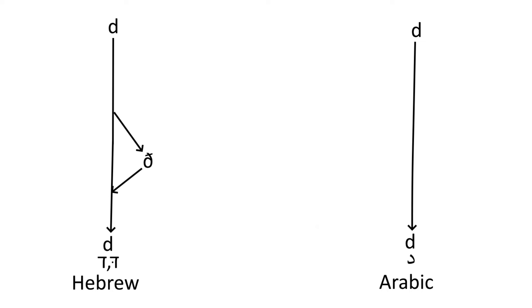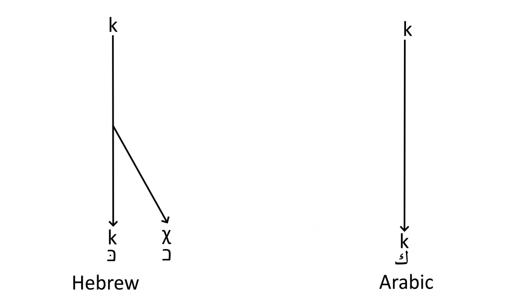Next, velar plosives. K went through Begadkefet in Hebrew to Ch, while Arabic retains the Ks in all positions. Thus compare Arabic, in some dialects, akel versus Hebrew ochel, food.